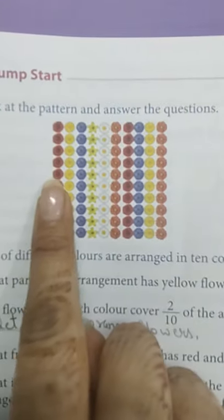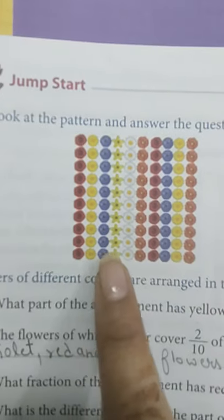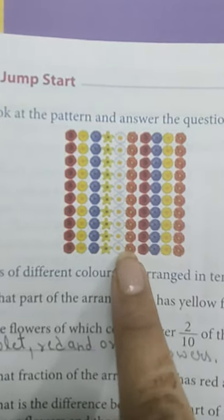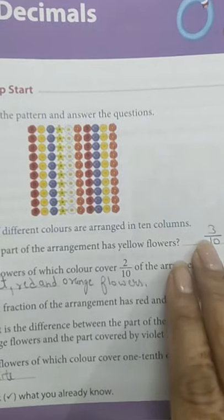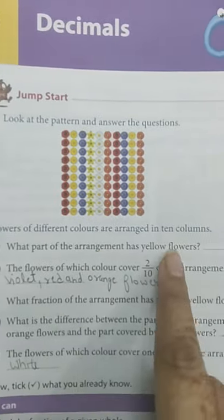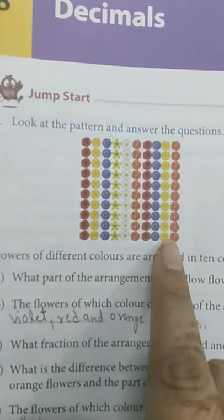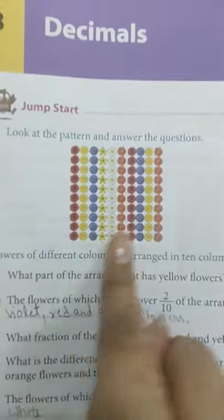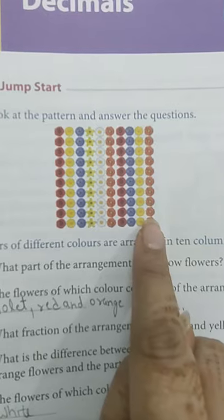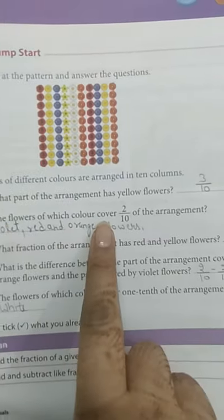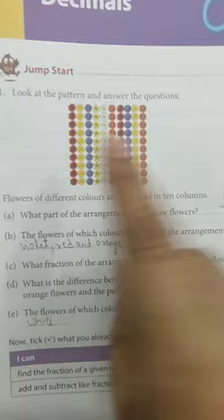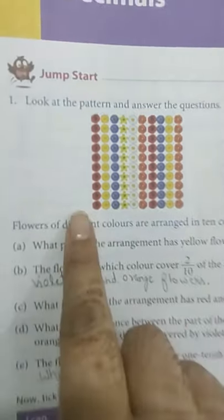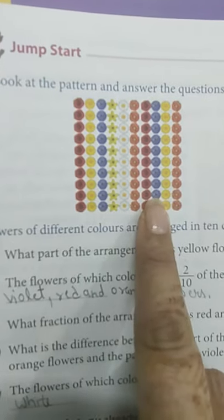The first thing discussed: look at the picture and answer the question. Different types of flowers are shown — red, yellow, violet, white, orange — arranged in 10 columns. How many parts have yellow flowers? As you can see, three arrangements are having yellow flowers, so we can say 3 by 10. Now, which flower color covers 2 by 10 of the arrangement? Red color has 2 columns.